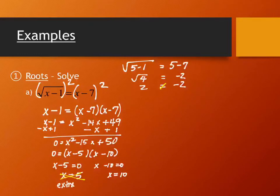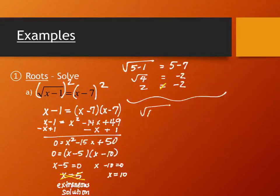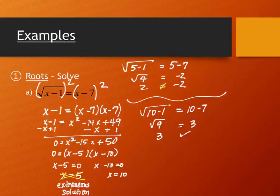It has a name. It's called an extraneous solution. I need to check the other one, though, too, because it could, or it also still might not. So I have the square root of 10 minus 1, and the question is, does that equal 10 minus 7? That one works, doesn't it? Yes, it does. So this is the square root of 9 is 3, and this one gives me 3. So this one checks out.